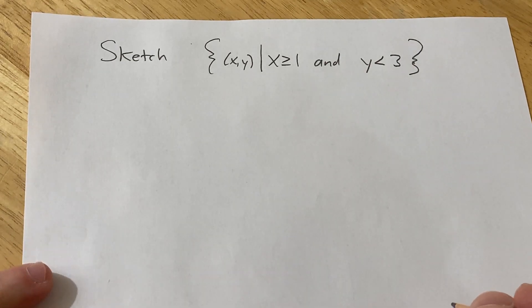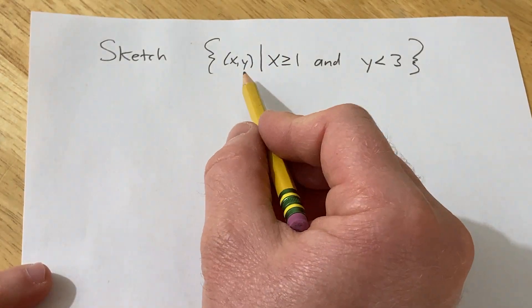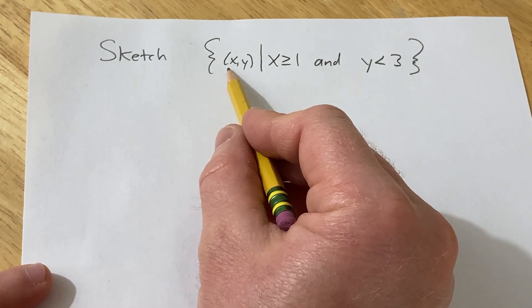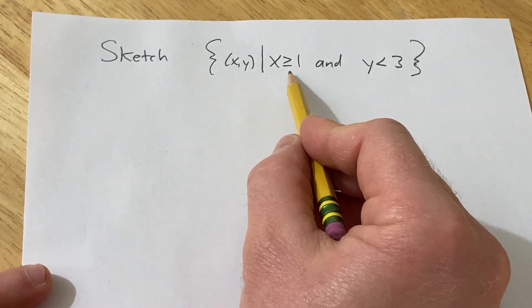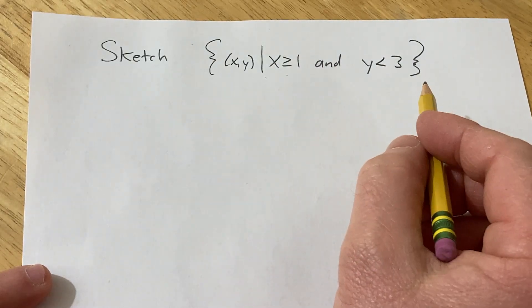Hello, in this problem we are going to sketch the region given by the set. This is the set of all ordered pairs such that x is greater than or equal to 1 and y is less than 3.